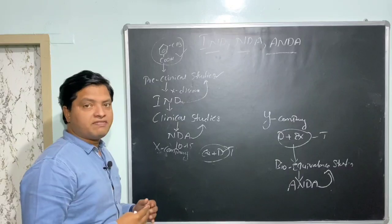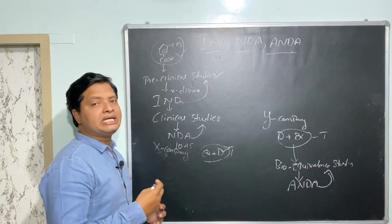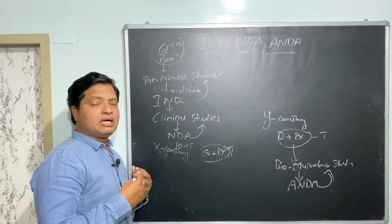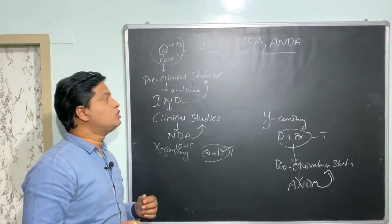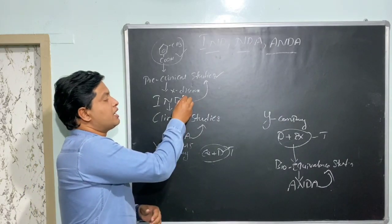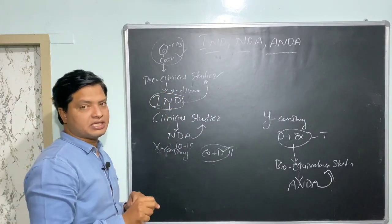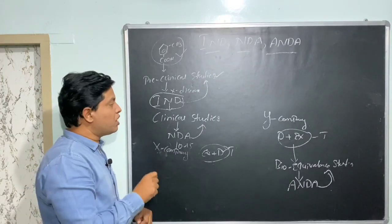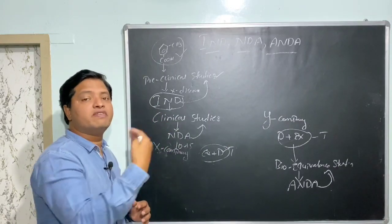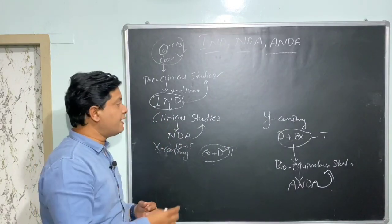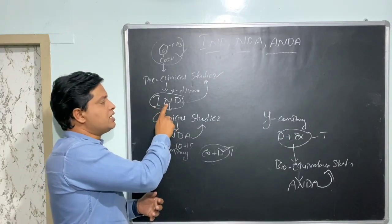After conducting preclinical studies, if the drug is found to be giving successful results, then we will move on to clinical studies. If I want to conduct clinical studies in India or in America, I need to give an application to the regulator called IND Application — Investigational New Drug Application. Why is it called so? Because I am going to investigate the effects of the drug on human beings, hence it is called Investigational New Drug Application.